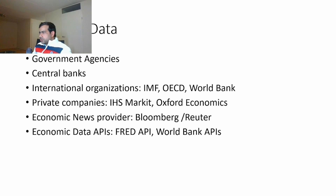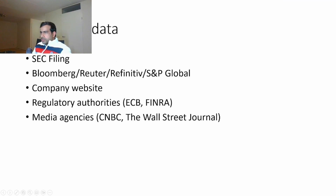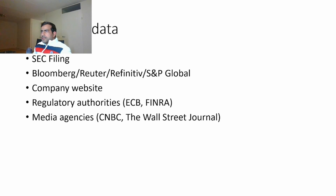Private companies like IHS Markit or Oxford Economics also provide economic data, and there are many others. Financial news broadcasters like Bloomberg and Reuters also provide economic, financial, and macroeconomic data. The best resources for macroeconomic data are actually government agencies, and most of that is free of cost. There are also economic data APIs — the FRED API and the World Bank API — that you can use.